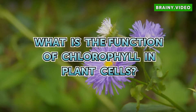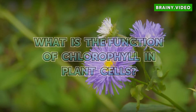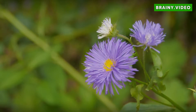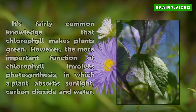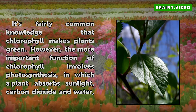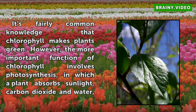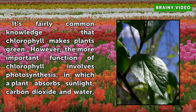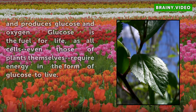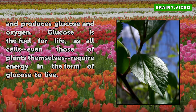What is the function of chlorophyll in plant cells? It is fairly common knowledge that chlorophyll makes plants green. However, the more important function of chlorophyll involves photosynthesis, in which a plant absorbs sunlight, carbon dioxide and water, and produces glucose and oxygen.